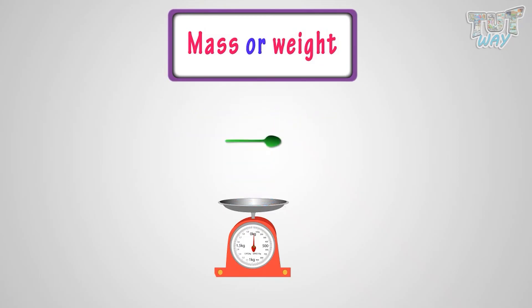Here is a disposable spoon. Its weight is about five grams. We write it like this.